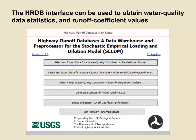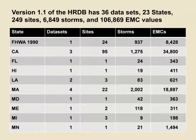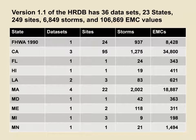The Federal Highway Manual for the database and the SELDOM website provide information on the design and use of the Highway Runoff Database. Version 1.1 of the Highway Runoff Database has 36 datasets, 23 states, 249 sites, 6,849 storms, and about 107,000 EMC values.